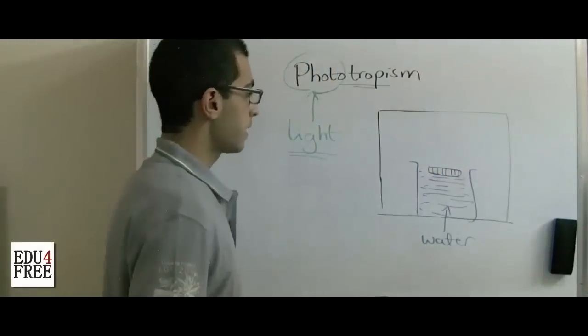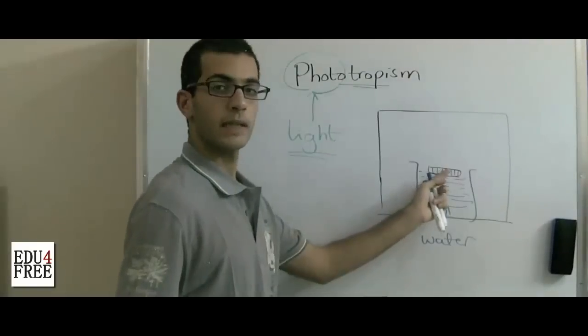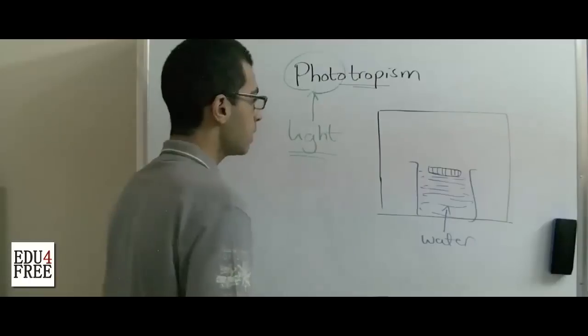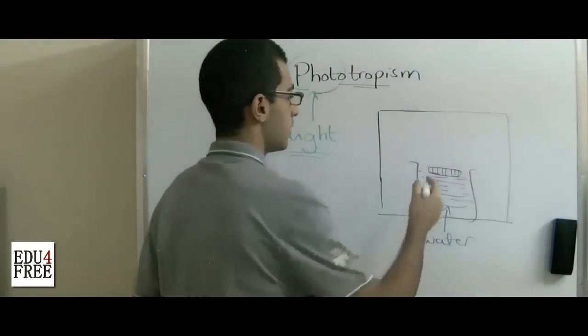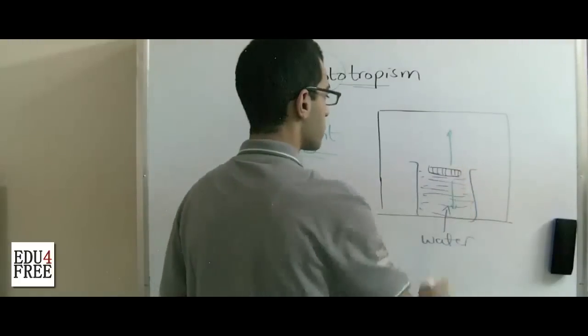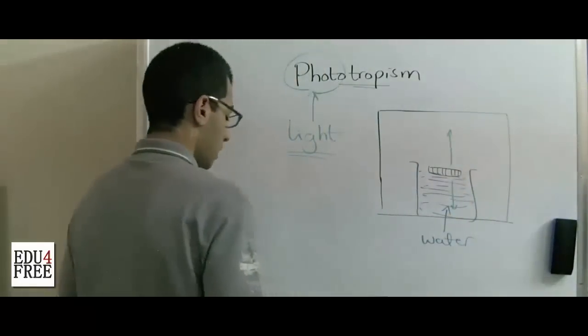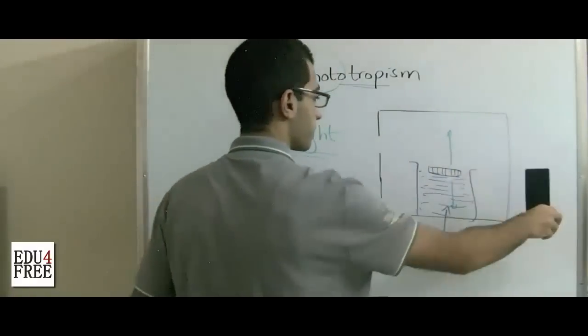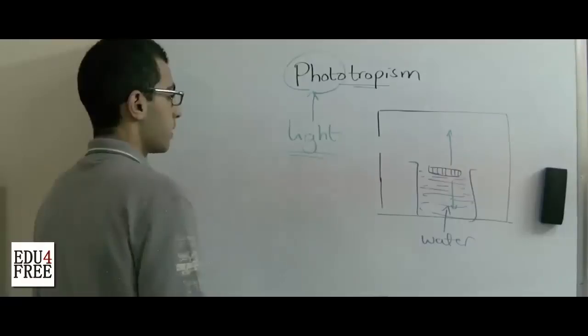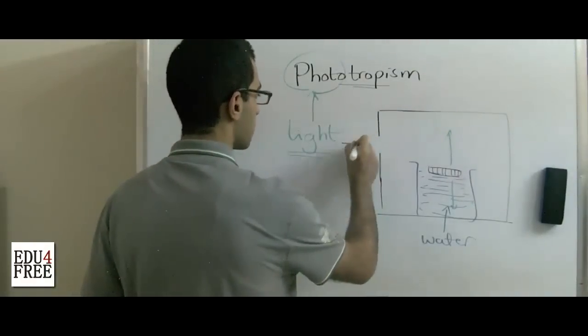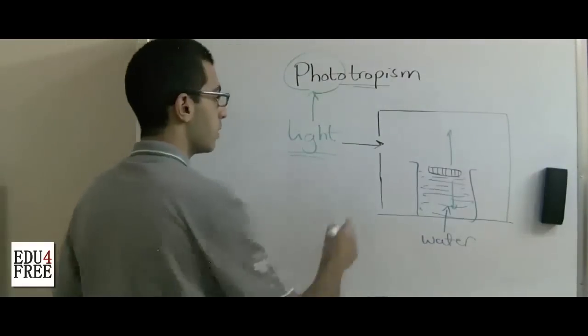There is a cork layer here. A seedling is planted in this cork layer so that a stem grows and a root grows inside the water. There is a hole in the box so that light goes into the box from this hole only.